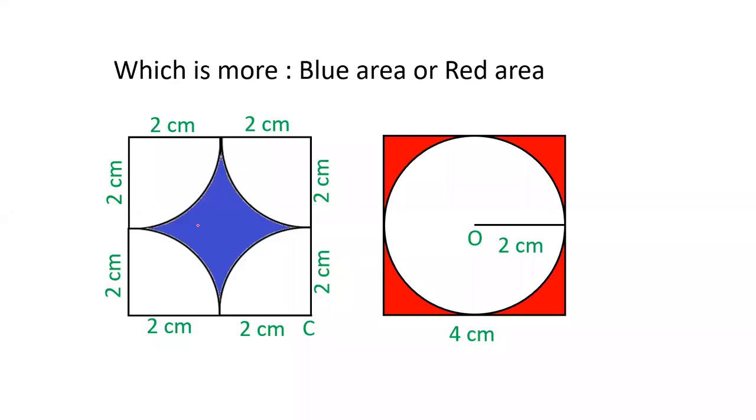Hello friends, welcome to our YouTube channel, License Selector. In this video, there are two different diagrams. Both are squares. There is a square of 4 cm. There is also a square of 4 cm.